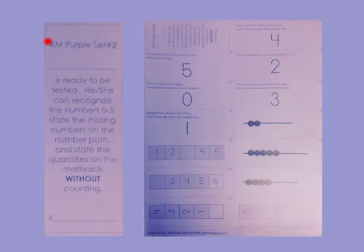For Purple Set 2, you must recognize the numbers 0 through 4. You must also state the number on the math racks and on the number paths.